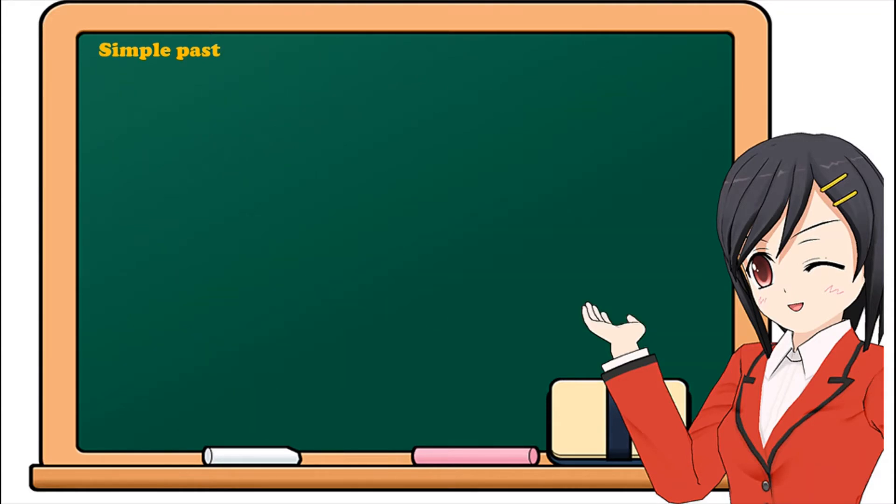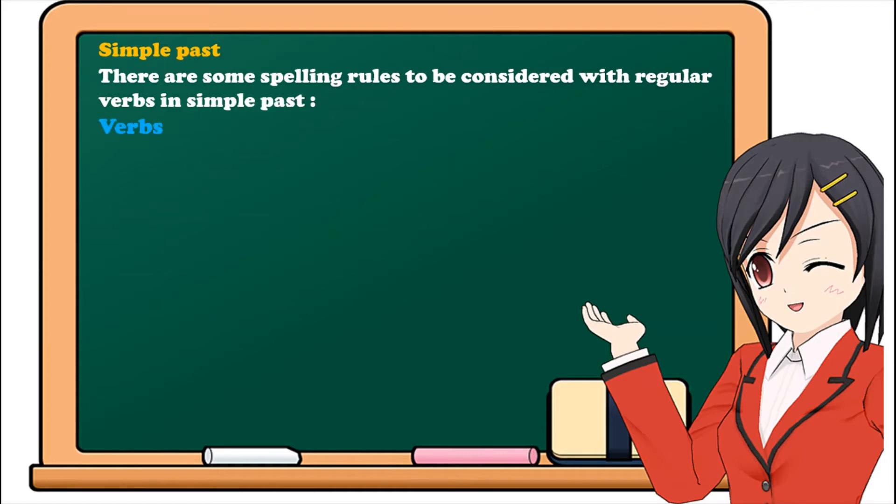There are some spelling rules to be considered with regular verbs in simple past. Number 1: Verbs ending with E, we just add D. For example, love, loved, like, liked.